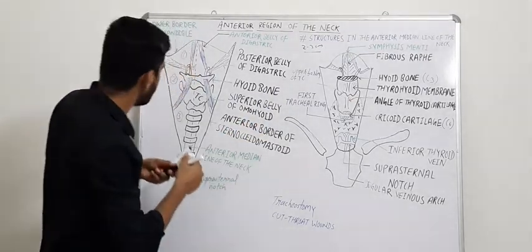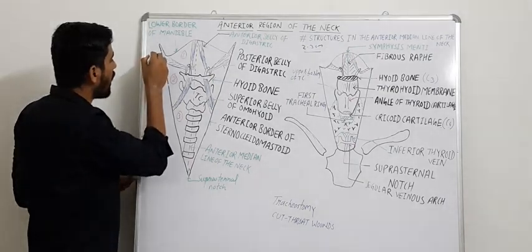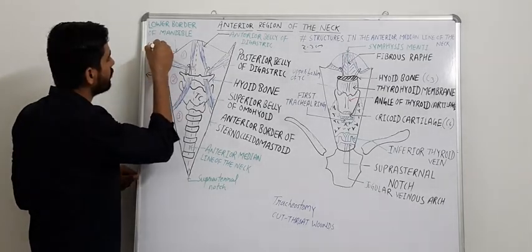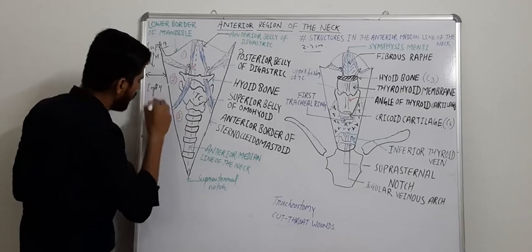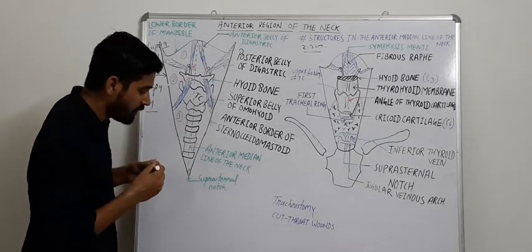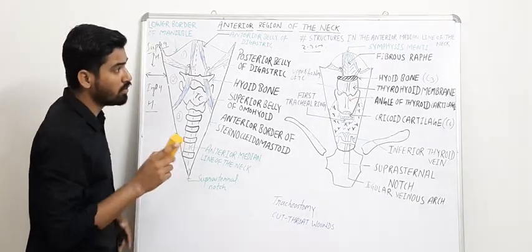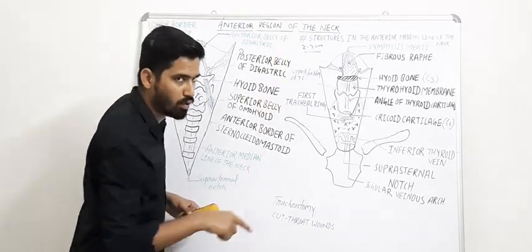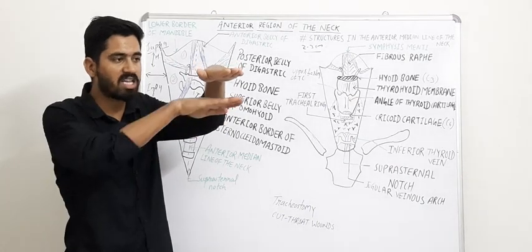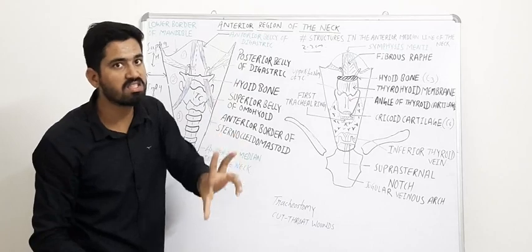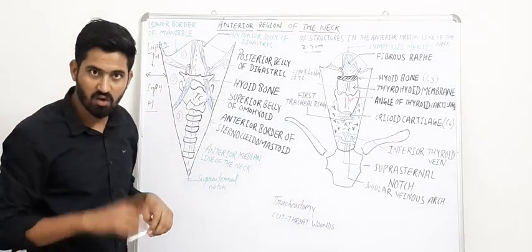The hyoid bone is at the level of C3. The area above the hyoid bone is called the suprahyoid region, and the area below is called the infrahyoid region. In the next video, we will read the suprahyoid and infrahyoid muscles of the neck. You should know the arrangement: hyoid bone, then thyroid cartilage, then cricoid cartilage, then the sternum — knowing this sequence will help you write the suprahyoid and infrahyoid muscles easily.